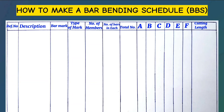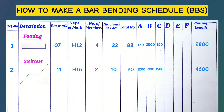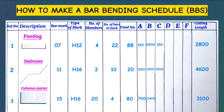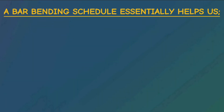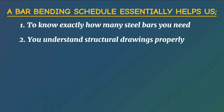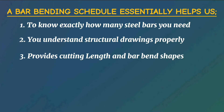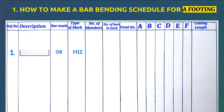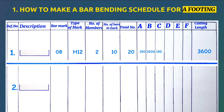Learning how to make a bar bending schedule is the most important skill that every civil engineer and quantity surveyor should know. It essentially helps us to know exactly how many steel bars you need for your project. You understand structural drawings properly in detail and also provides the cutting length and the bar bend shape that can clearly be understood by everyone on site.